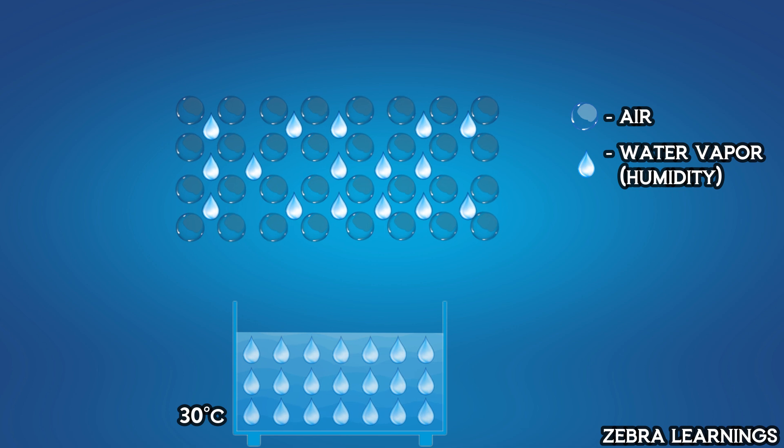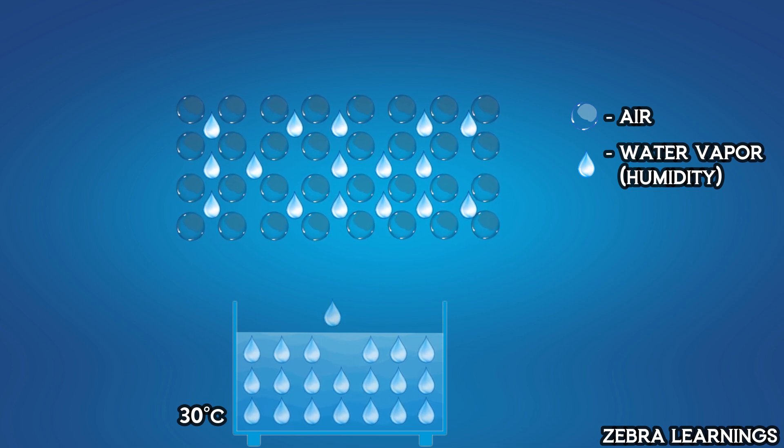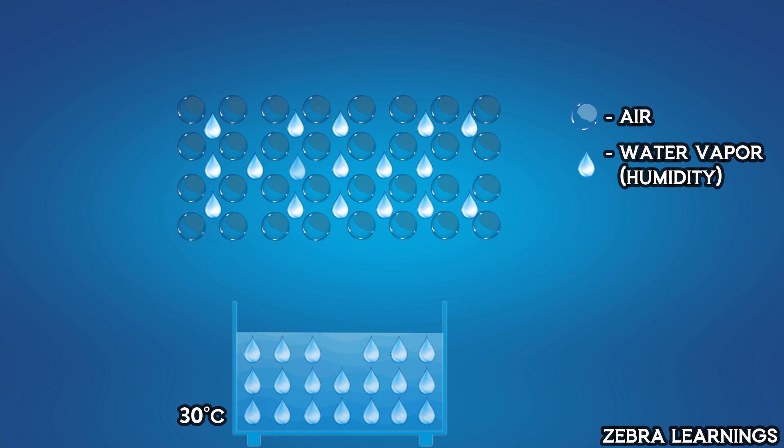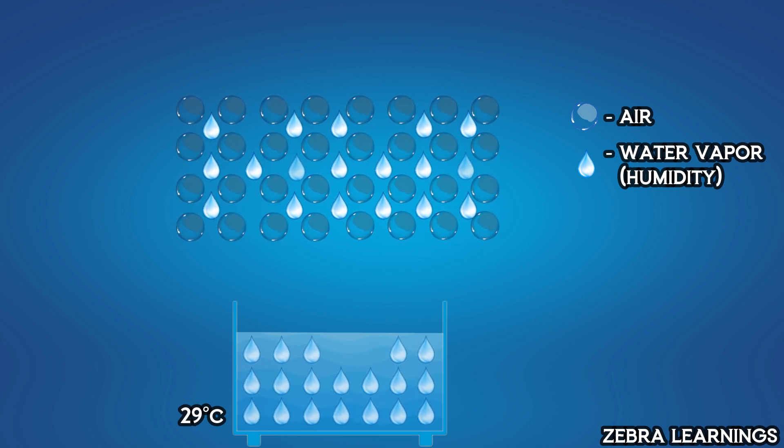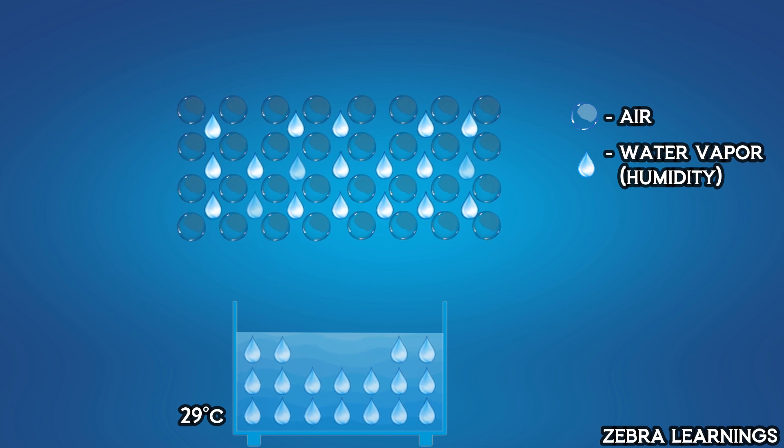When the humidity level in the atmosphere is high, the water in the bowl tries to evaporate and mix with the atmosphere. However, because the atmosphere already contains a lot of water vapor, the water in the bowl will evaporate slowly. Therefore, the water temperature will decrease at a slower rate.